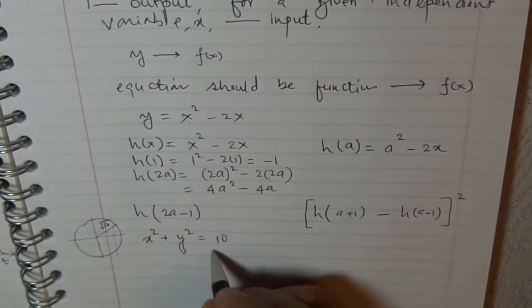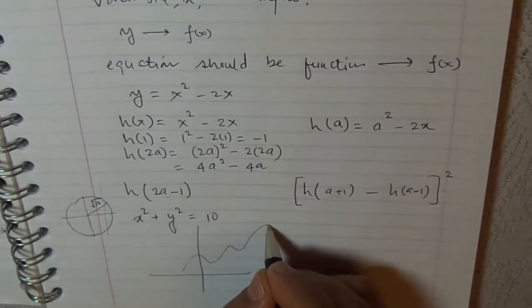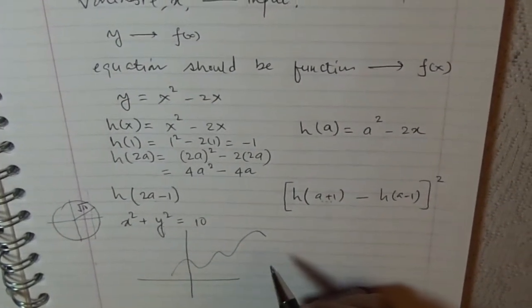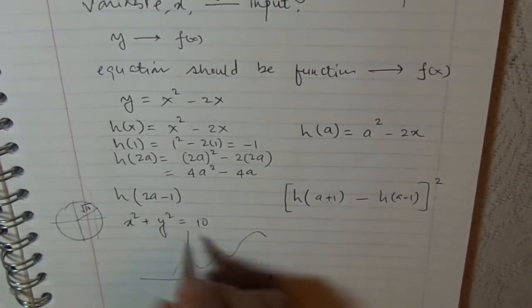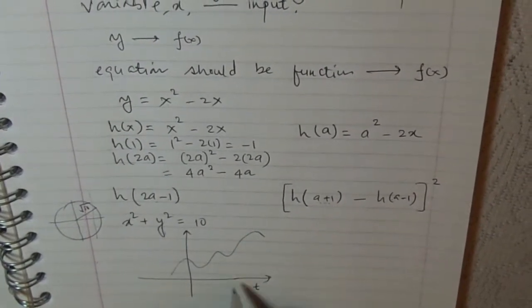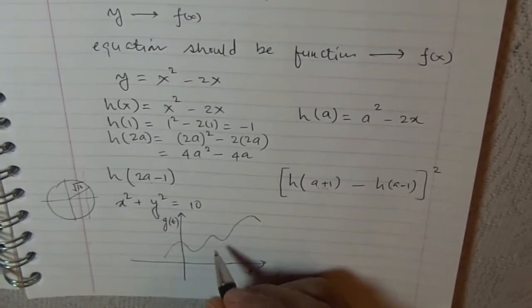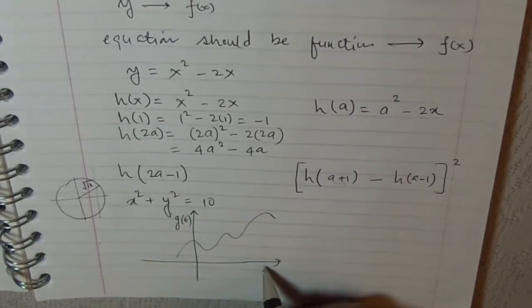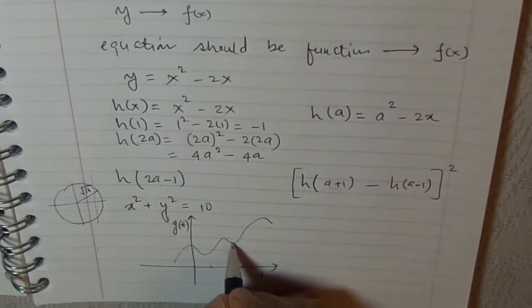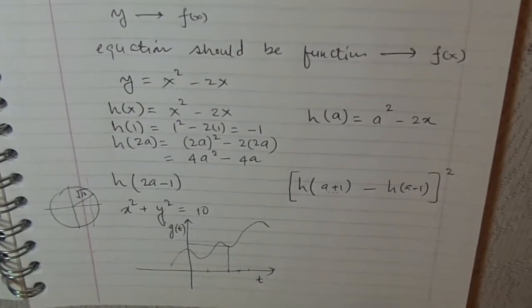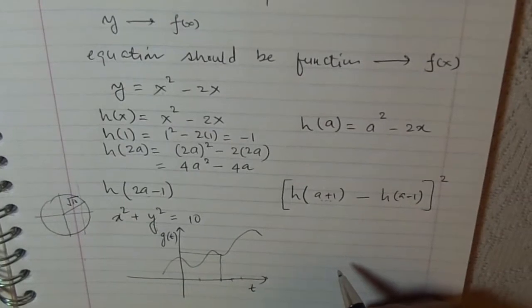Function notation is not restricted to just these equations. Functions we can use to represent graphs. Then g(t) is the value for each instance of time. So we can use functions in many applications.